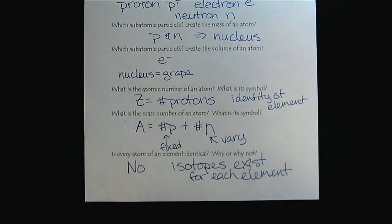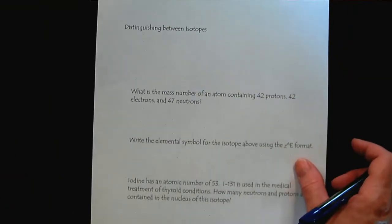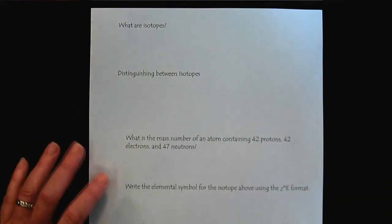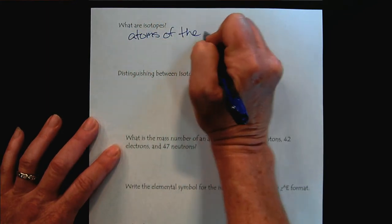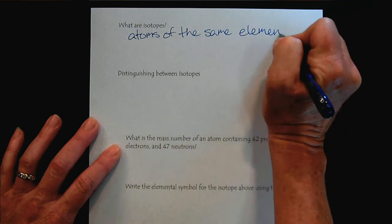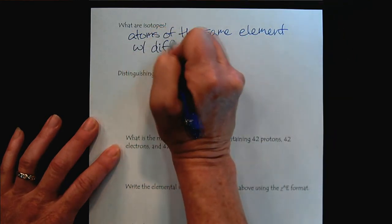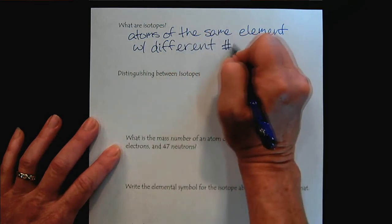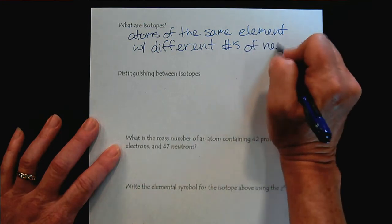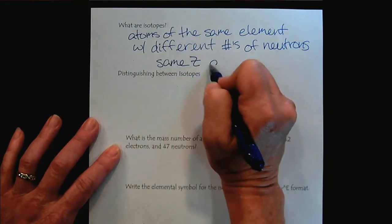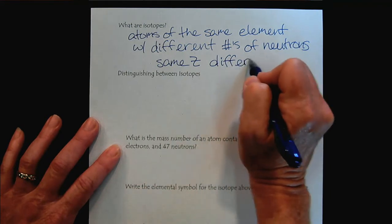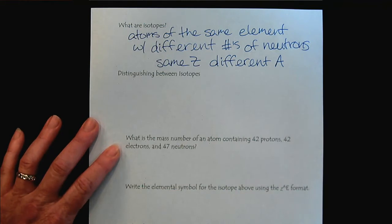I've already described isotopes, but let's look at them a little more closely. So what are isotopes? They're atoms of the same element with different numbers of neutrons. If we use the language, they have the same Z, atomic number, number of protons. And different A, mass number.